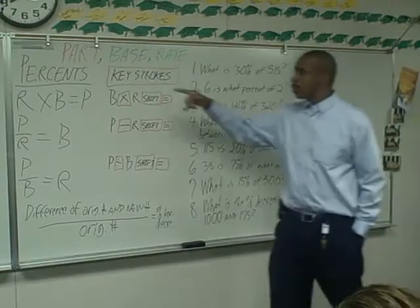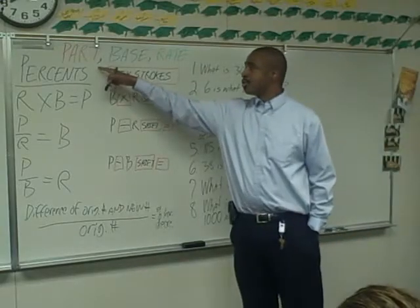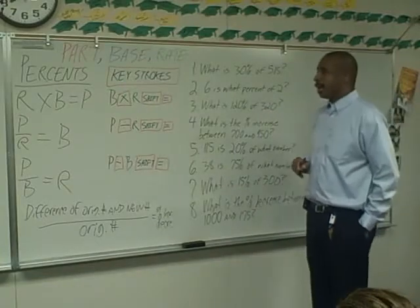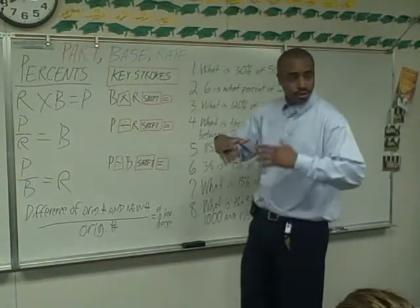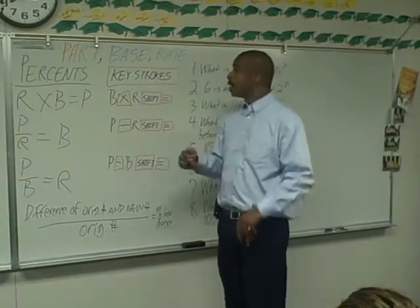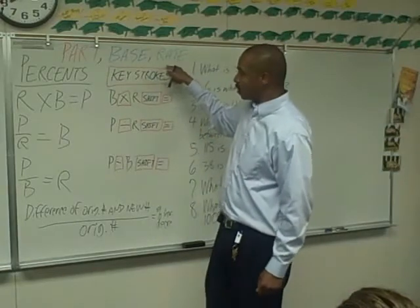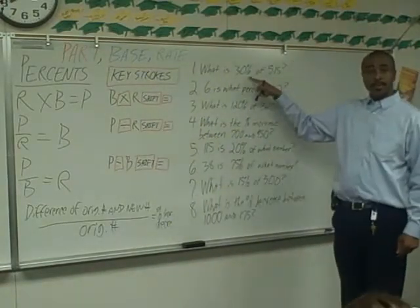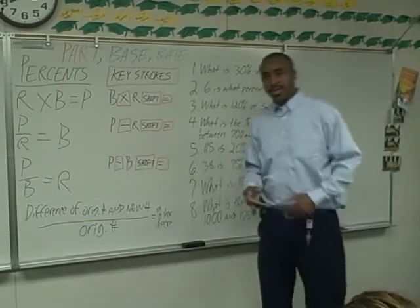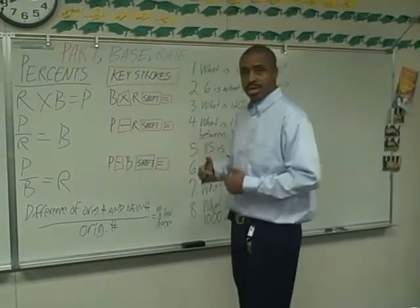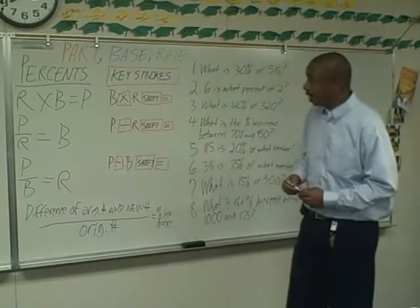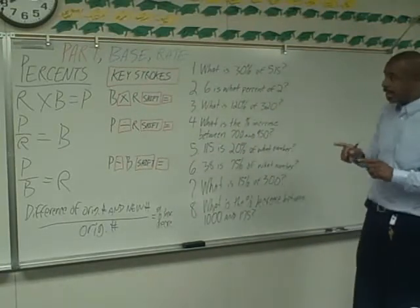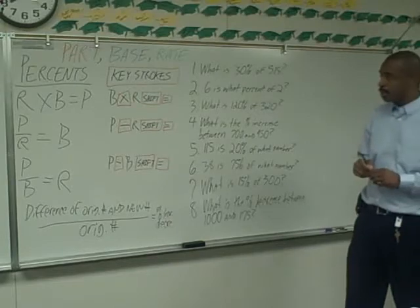There are three pieces to a percent problem: there's the part, the base, and the rate. The base is just the whole amount, the whole number. The rate, you always know it because it has a percent sign next to it. And then the part is a part of the base — not the whole base, but a part of the base. So those are the three parts of a percent problem.